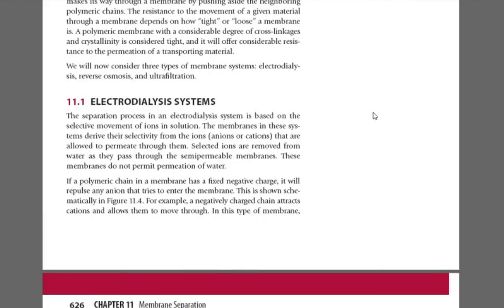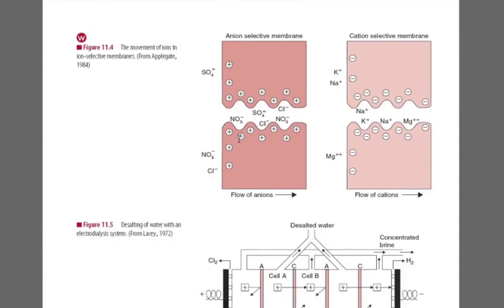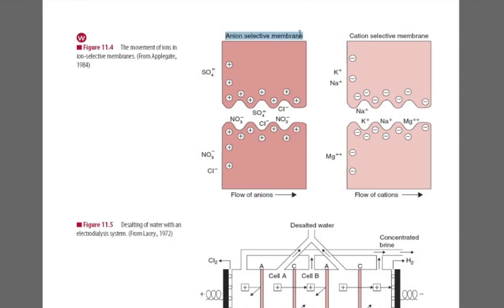Moving on to the electrodialysis system, it uses selective membranes — anionic and cationic. The anionic selective membrane allows the flow of anions, and the cationic selective membrane allows the flow of cations. Anions are negatively charged ions and cations are positively charged ions. Cations move towards the cathode, which is negative. Anions move towards the anode, which is positive.